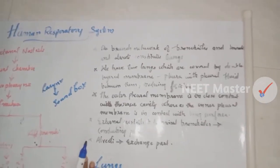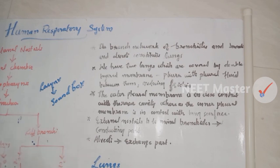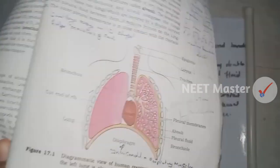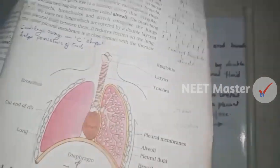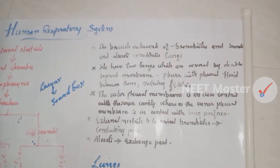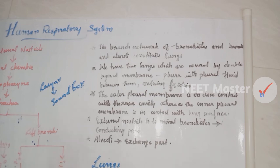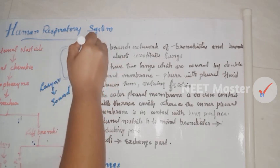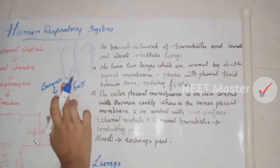The branching network of bronchioles and alveoli constitutes the lung. We have two lungs, which are covered by a double-layered membrane.